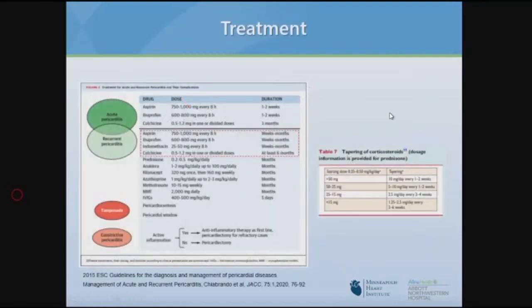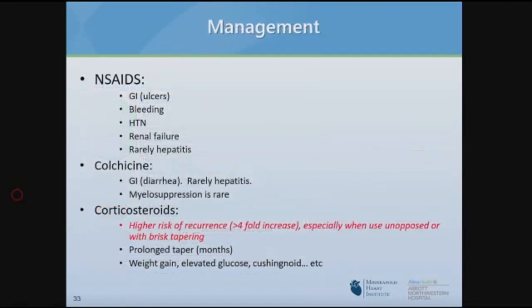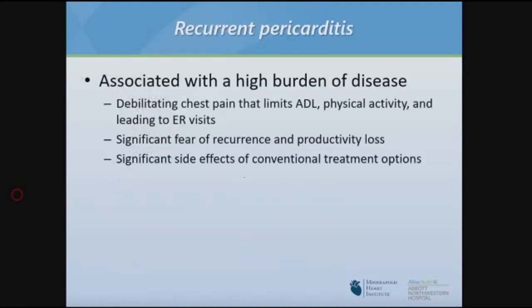Treatment for recurrent pericarditis is the same as for the initial episode, but the duration is longer — weeks to two months with the same medications. If steroids are used, they should be low dose and weight-based — typically 0.25 to 0.5 mg/kg per day rather than 1 mg/kg. When tapering down to 10 to 15 mg, recurrences are most likely, so the taper should slow considerably. Steroids used alone without colchicine or other NSAIDs are associated with over fourfold higher recurrence.